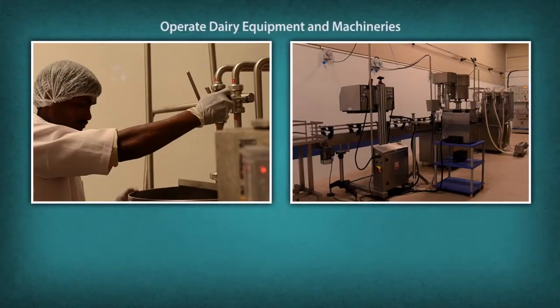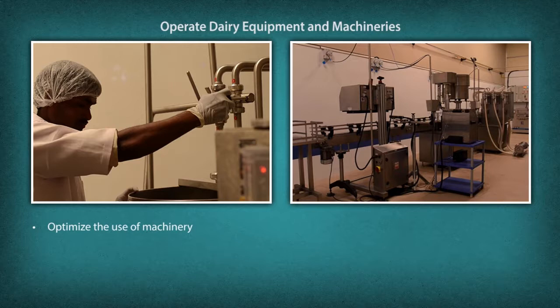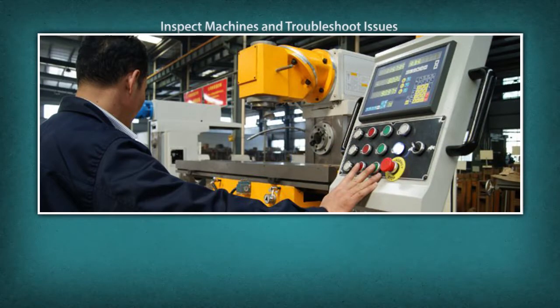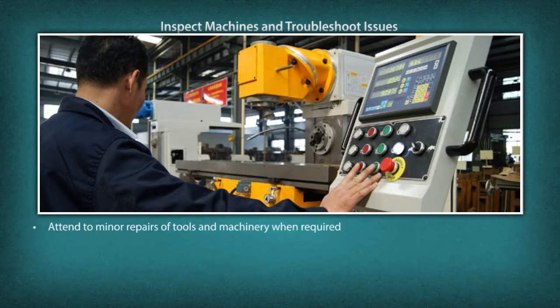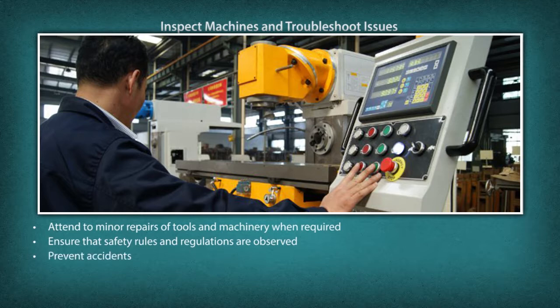Operate dairy equipment and machineries. Optimize the use of machinery. Ensure smooth operation of machinery to complete the production line. Inspect machines and troubleshoot issues. Attend to minor repairs of tools and machinery when required. Ensure that safety rules and regulations are observed. Prevent accidents.